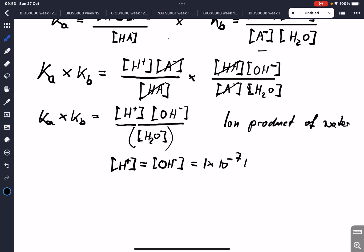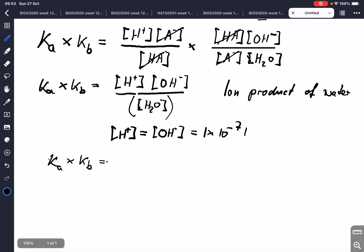So what we can do now is, we can say, Ka times Kb equals 1 times 10 to the minus 7 molar times 1 times 10 to the minus 7 molar. These are our concentrations. And this would be, if we multiply that out, would be 1 times 10 to the minus 14. And the unit probably would be molar squared.